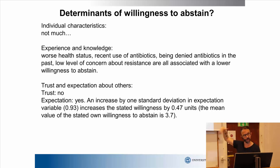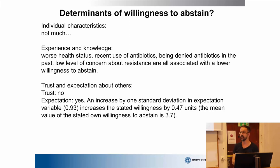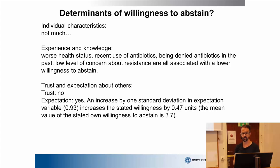This suggests that maybe there are ways to affect people and increase their voluntary willingness to abstain by targeting these experiences and knowledge. From a social science perspective, we were also interested in whether trust and expectations about others correlate with this. Trust in society had no effect, but expectations about what others are doing had a pretty big effect on where they end up in the distribution. So, explaining the variation: yes, we can do that, but not with individual characteristics — we can do it with expectations of what others are doing and their past experience. Thank you.